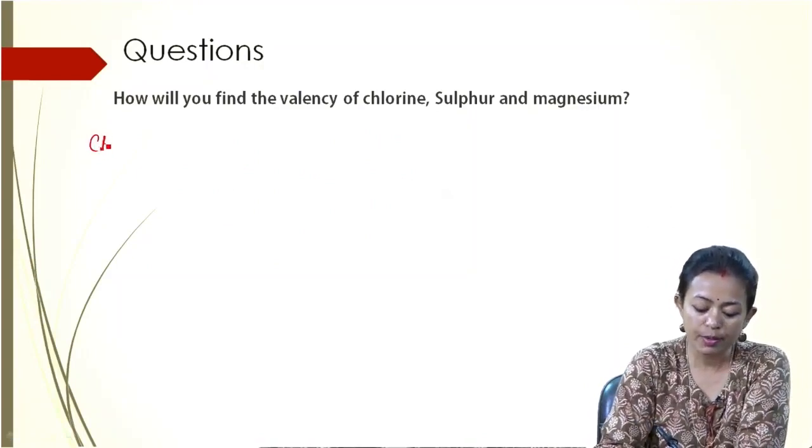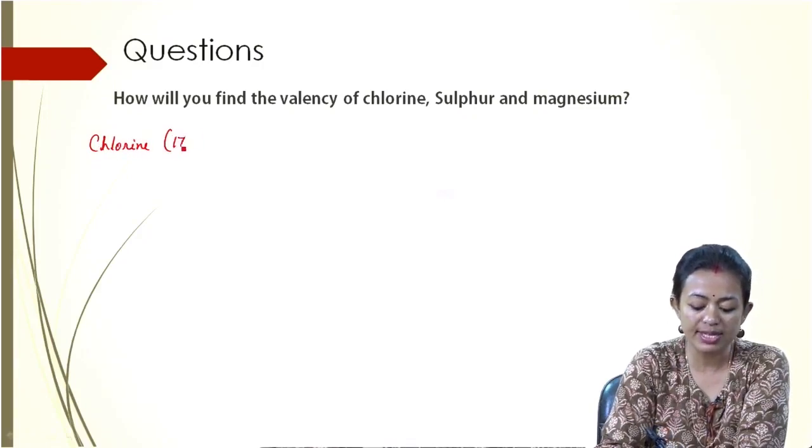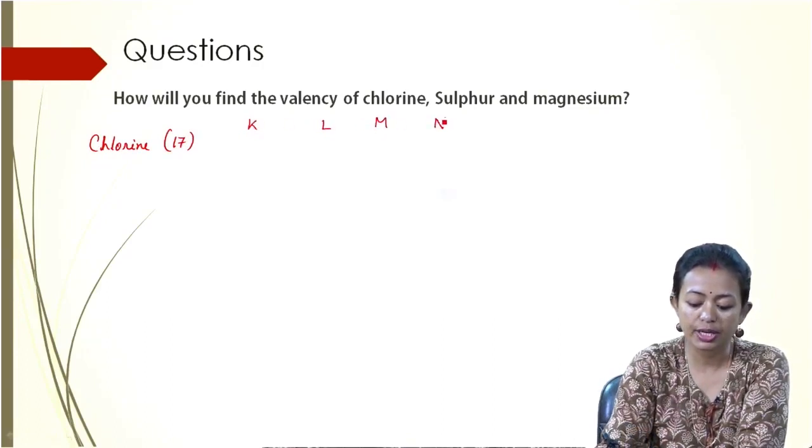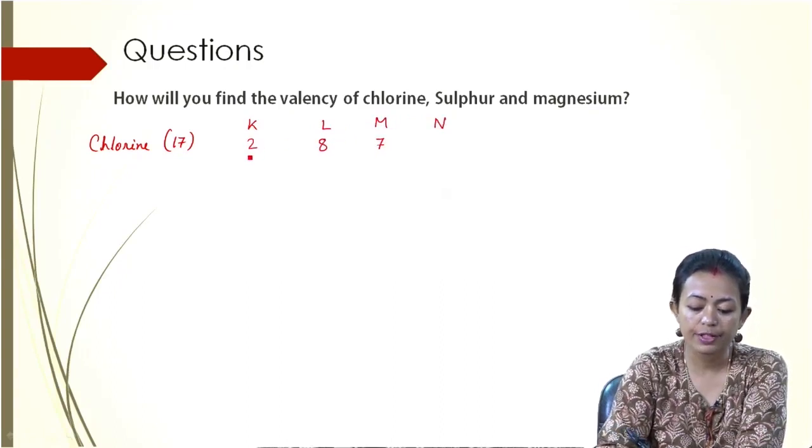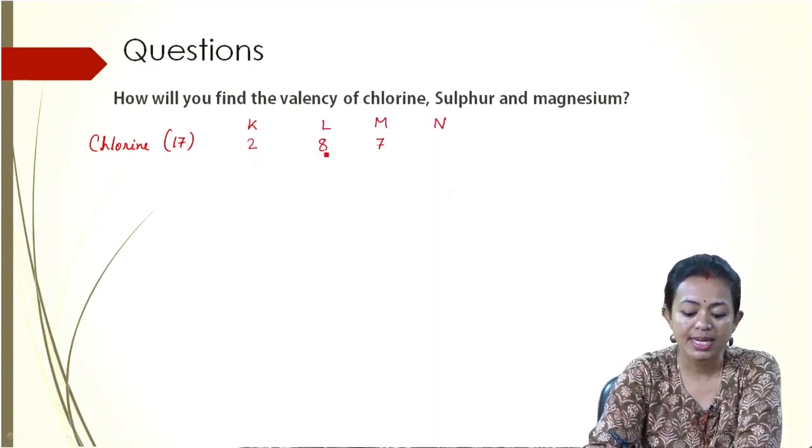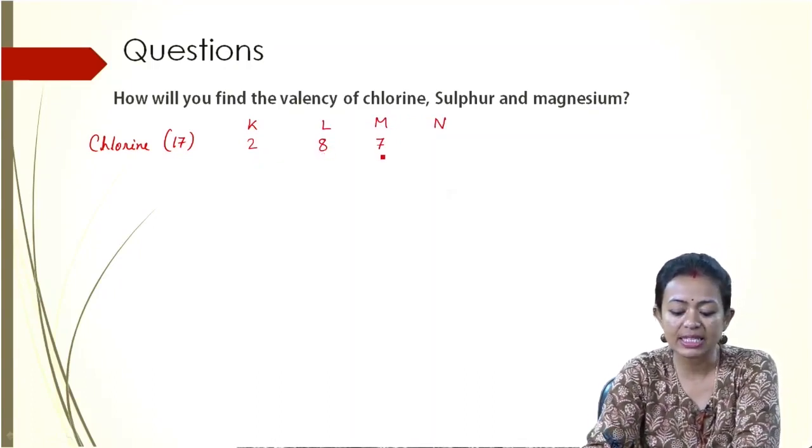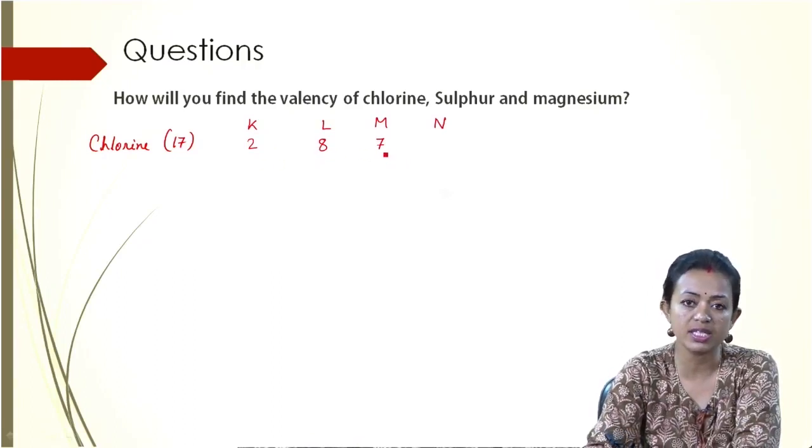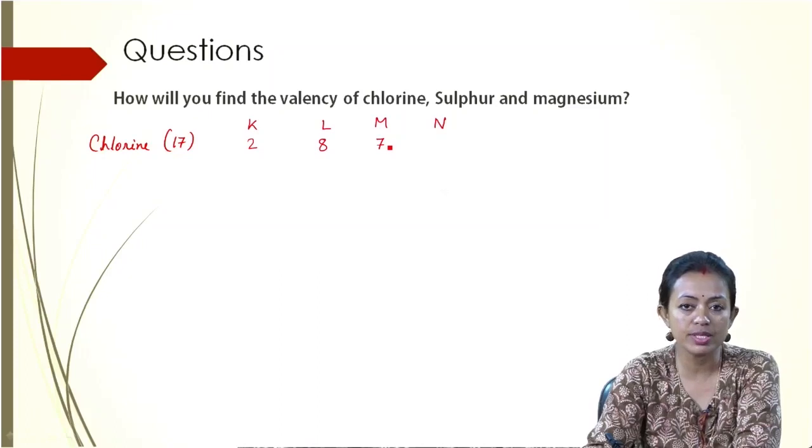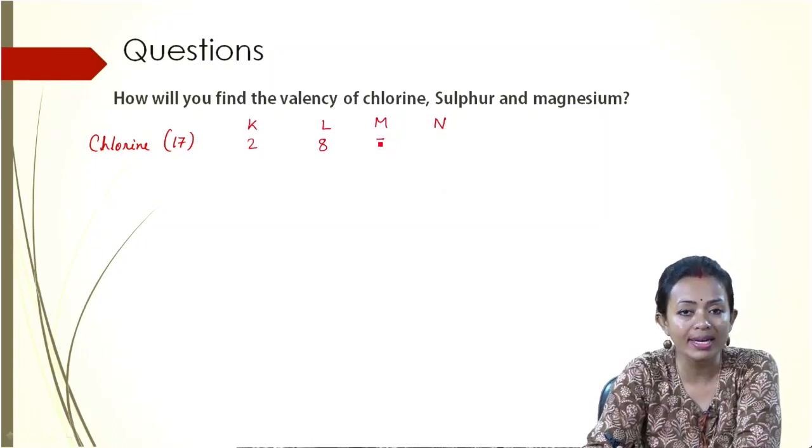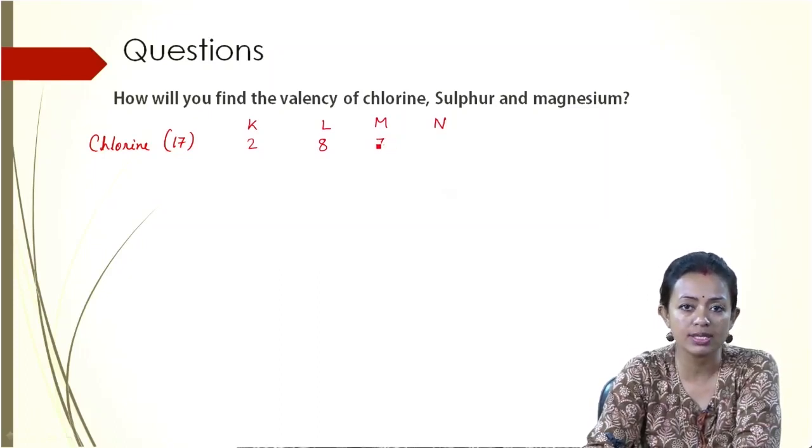So in case of Chlorine, the number of electrons is 17. So the K, L, M, N shells—how will it be arranged? 2, 8, 7. First shell 2 maximum, second shell 8 maximum, and in the third shell the leftover—that is 2 plus 8, 10, 10 plus 7, 17. Now in the M-shell you see it is running short of 1 electron to become an octet, completely filled.